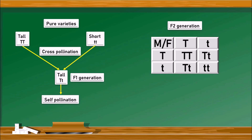According to the probability functions, the ratio of tall plants to short plants: capital T capital T and capital T small t are tall plants, but small t small t are short plants. Observing the phenotypic ratio, 75% of the plants will be tall — that is three-fourths — and only one-fourth will be short plants. So the phenotypic ratio is 3:1.